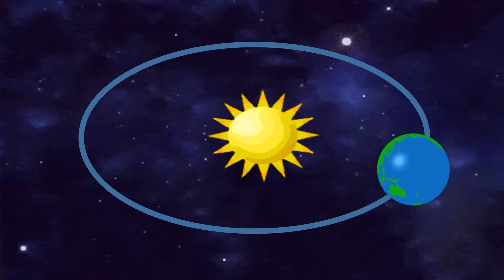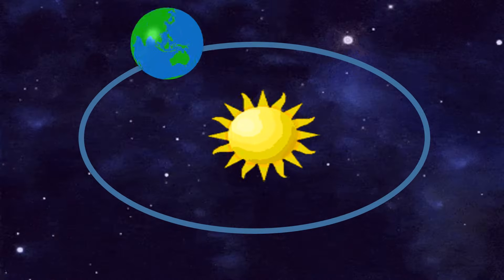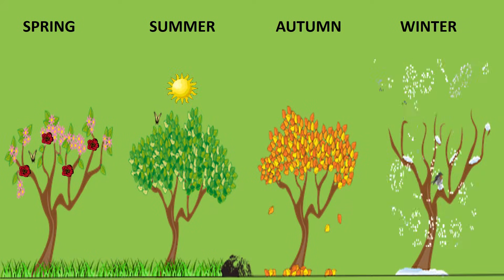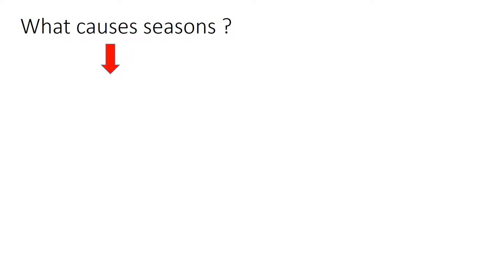Revolution of the Earth around the sun makes the Earth experience four different seasons, like summer, autumn, winter, and spring. About what causes seasons, you can watch this video below.